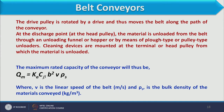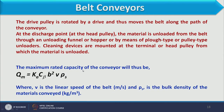The maximum rated capacity of a belt conveyor can be calculated using the empirical relation: Q_m = k_a · c_β · b² · v · ρ_s, where k_a and c_β are constants, b is the width of the belt, v is the linear speed of the belt in meters per second, and ρ_s is the bulk density of the material.